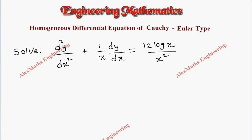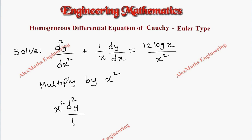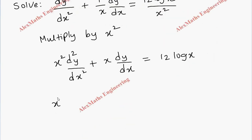Hi students, this is Alex. In this video we are going to solve a problem based on the homogeneous differential equation of Euler type, also known as the Cauchy-Euler type, where the coefficients are variables. Let's rearrange this — I'm going to multiply by x² throughout, so the first term becomes x² d²y/dx² plus x dy/dx equals 12 log x. This gives us x² D² plus x D of y equals 12 log x.